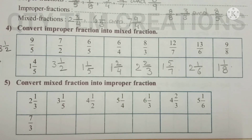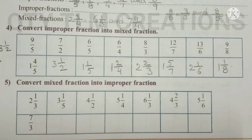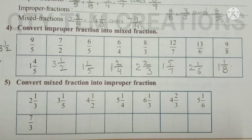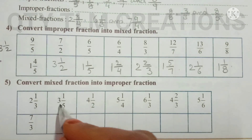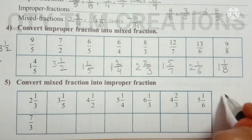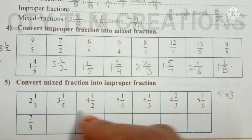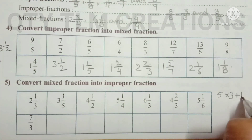Next question: convert mixed fractions into improper fractions. To convert a mixed fraction into an improper fraction, multiply the denominator by the whole number and add the product to the numerator. This sum over the denominator gives the improper fraction. For example, 1 and 3/4 becomes: 5 times 3 equals 15, plus numerator 1 equals 16, so the answer is 16/5.